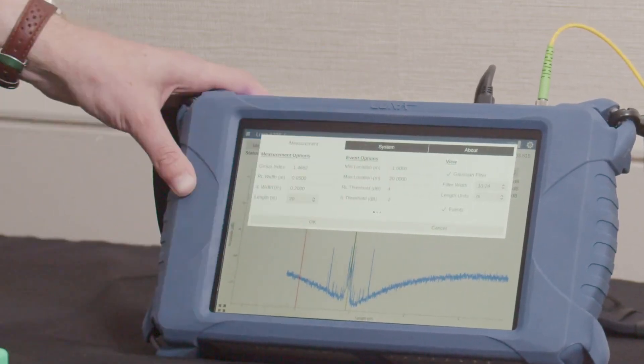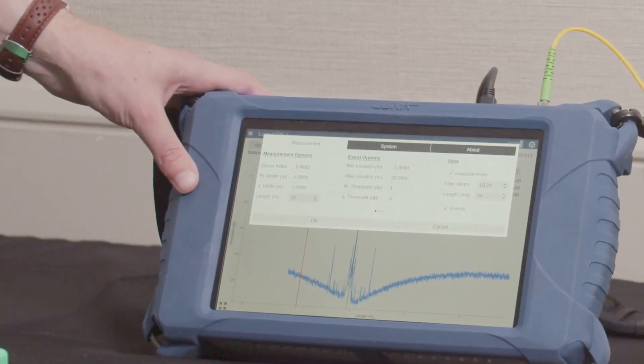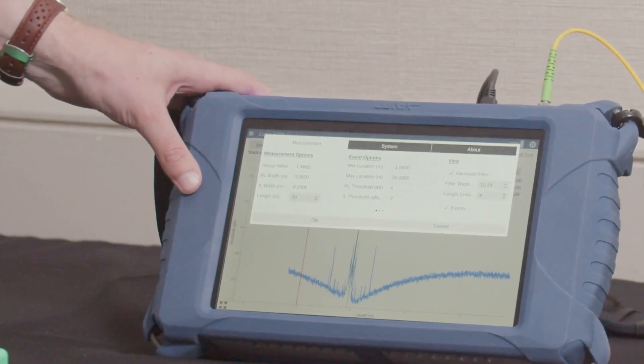You also have an insertion loss threshold. This is how much loss you're looking for over a short distance. So if you have a fiber break or a poor connector, you'd expect to see one, two, three dB of loss.